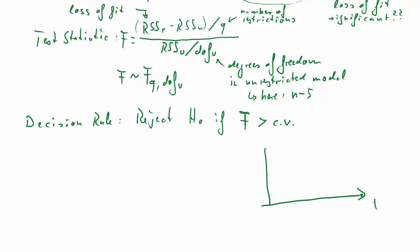So let's just sketch a little F-distribution. It looks a bit like this, depending on the degrees of freedom. But it's only on the positive line. And that is because this loss of fit term will always be positive. And the denominator will always be positive as well. So F-tests will always be positive.